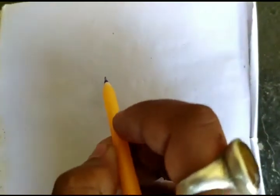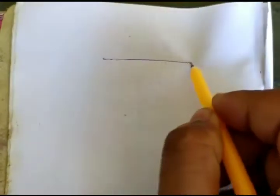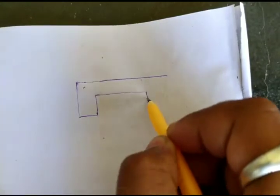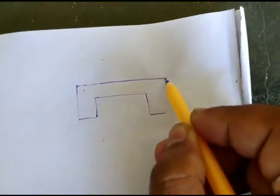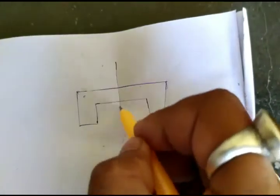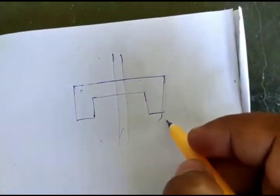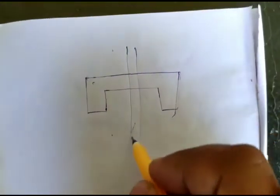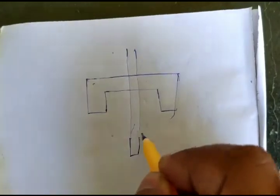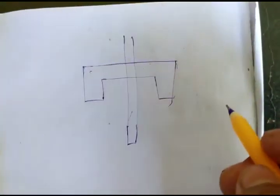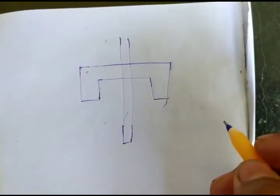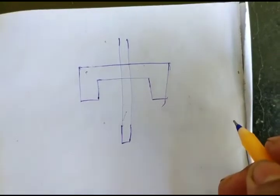The construction of single phase energy meter. Let us draw the picture. It consists of two coils. One is current coil and another is special coil. The current coil has less number of turns but the diameter of the wire is thick. But the pressure coil winding has more number of turns but the diameter of the wire is thin.